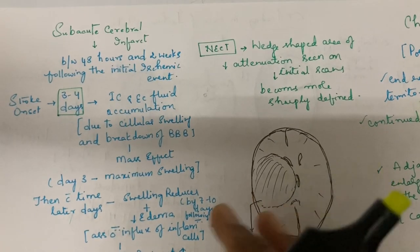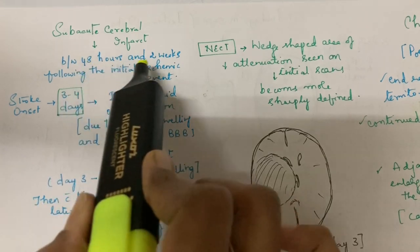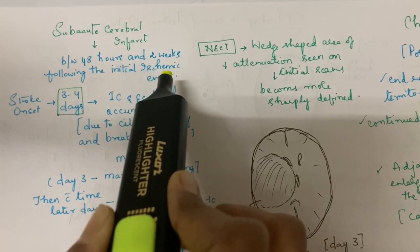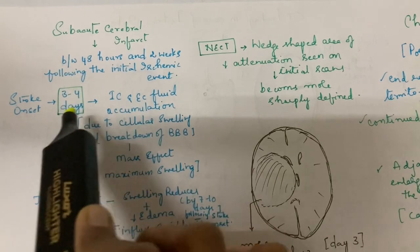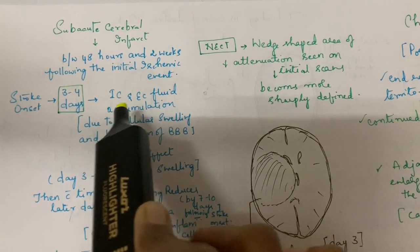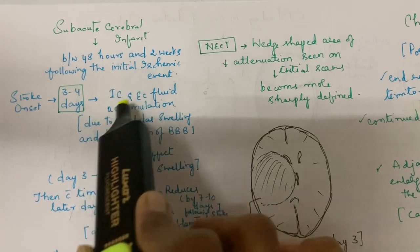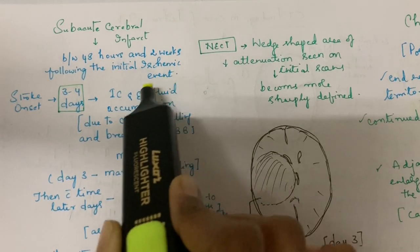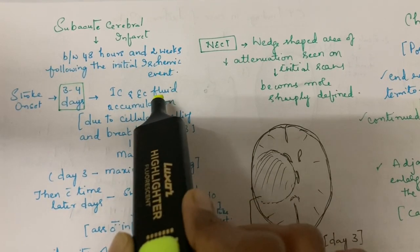Coming to subacute infarct: subacute infarct occurs between 48 hours and two weeks following the initial ischemic event. Within three to four days, there will be cytotoxic edema with both intracellular and extracellular fluid accumulation. Cellular swelling occurs due to breakdown of blood-brain barrier.